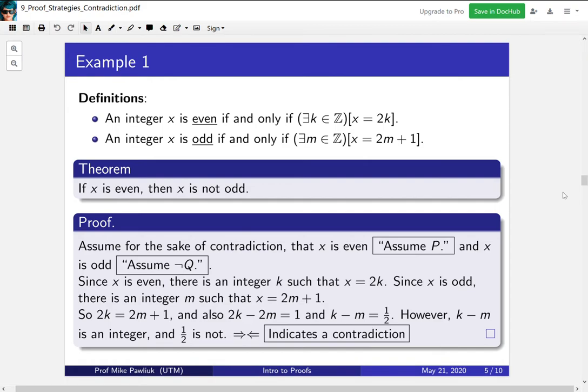So we have these two double arrows that are smashing into each other. That's one way of representing a contradiction. It tells your reader that you've reached a contradiction and you can stop.